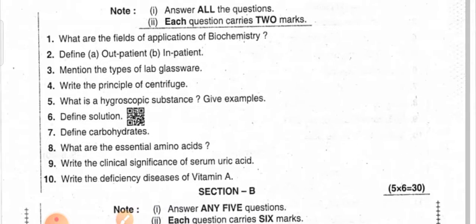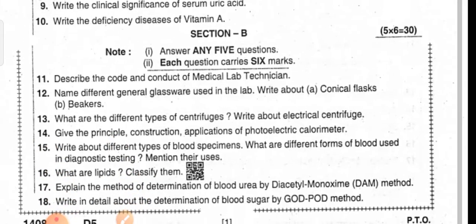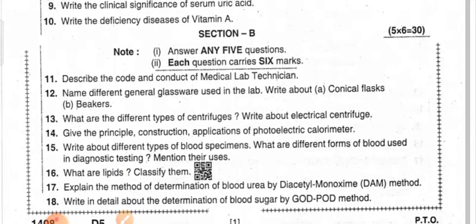These are the 10 questions for Section A for MLT first year biochemistry, Andhra Pradesh. There is no choice — you have to attempt all the questions. Section A carries 20 marks, Section B carries 30 marks, overall total is 50 marks, and pass marks are 18.